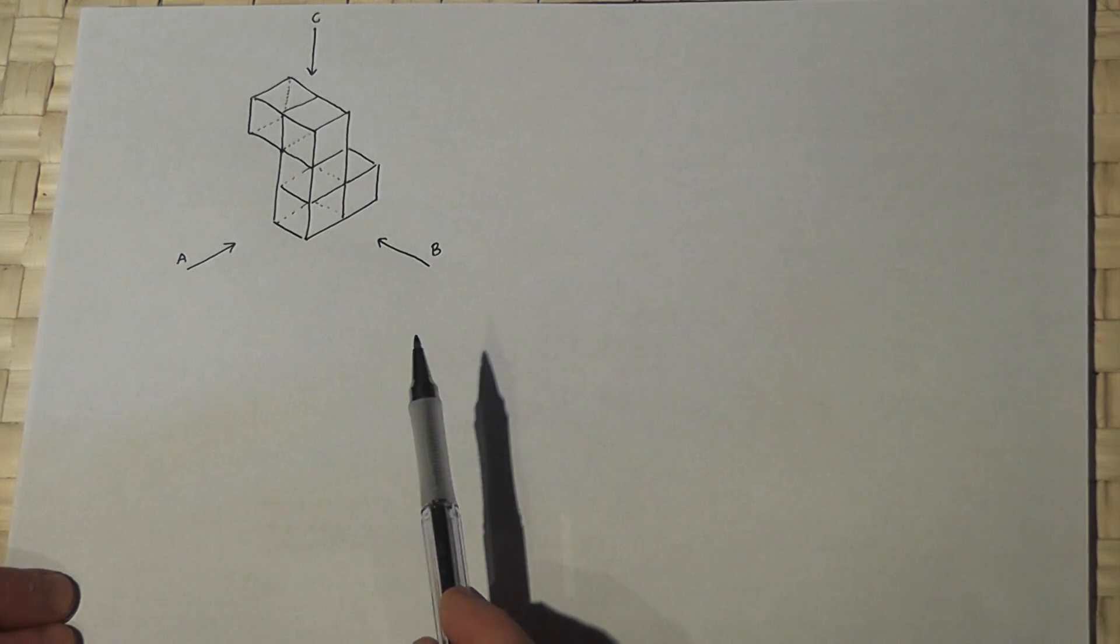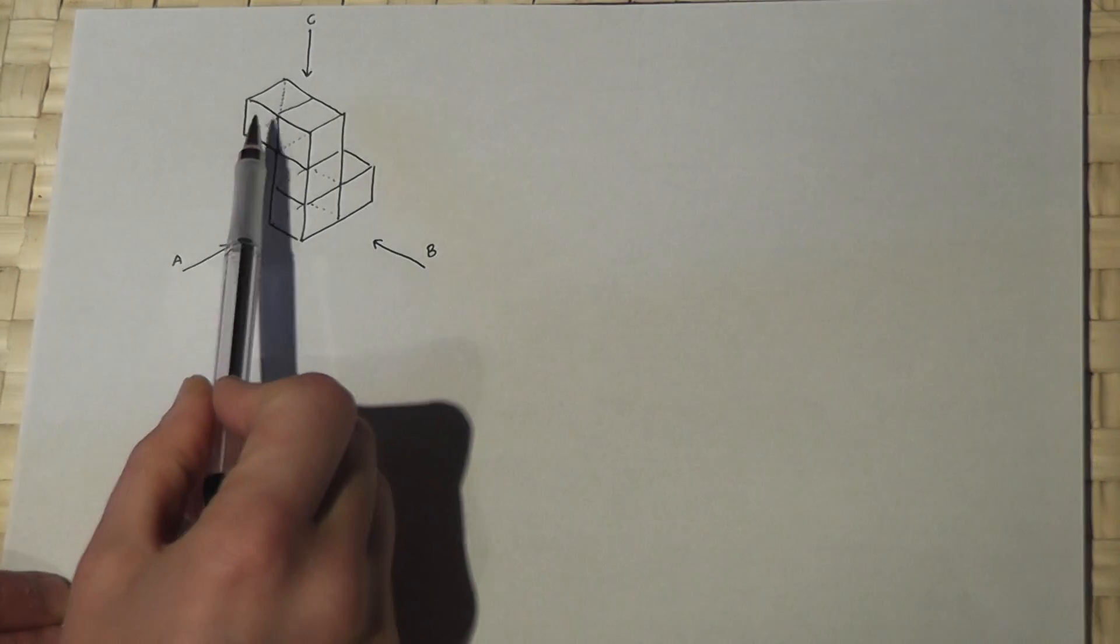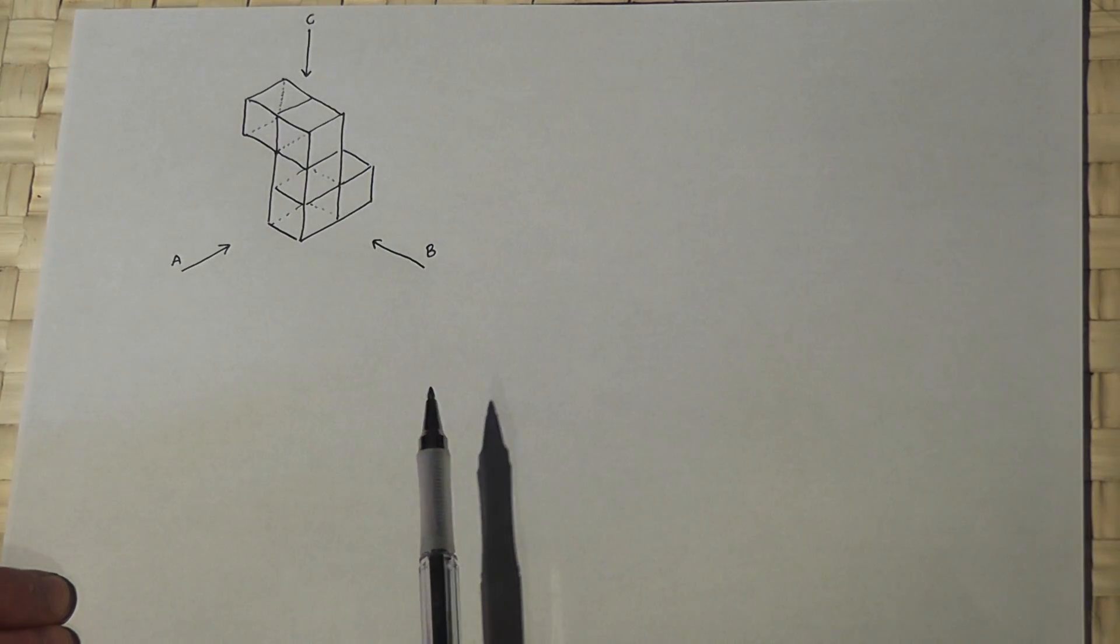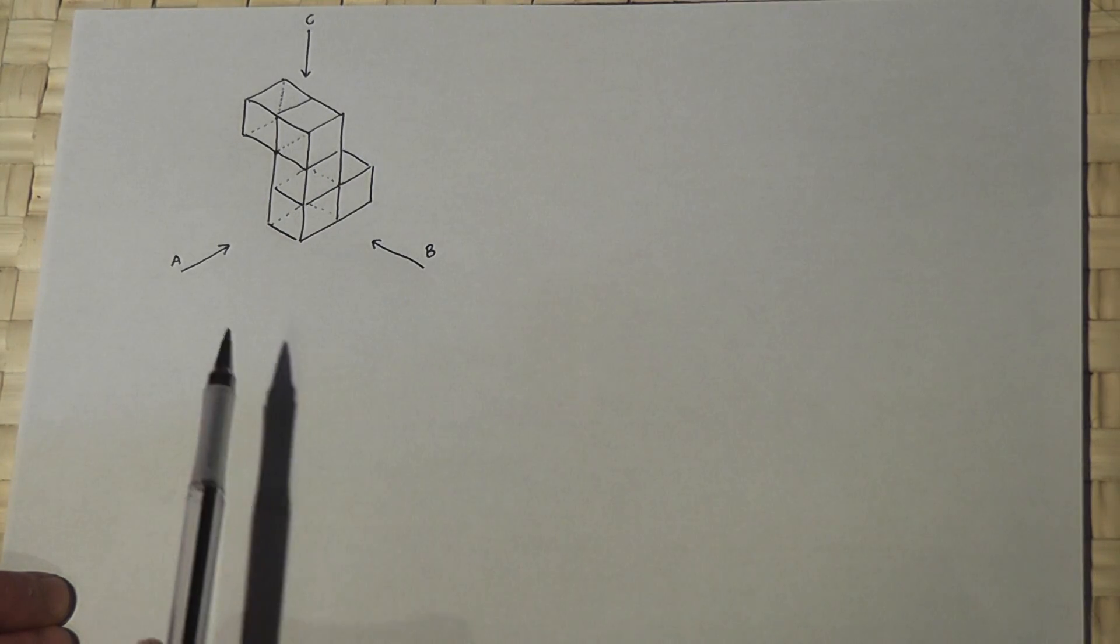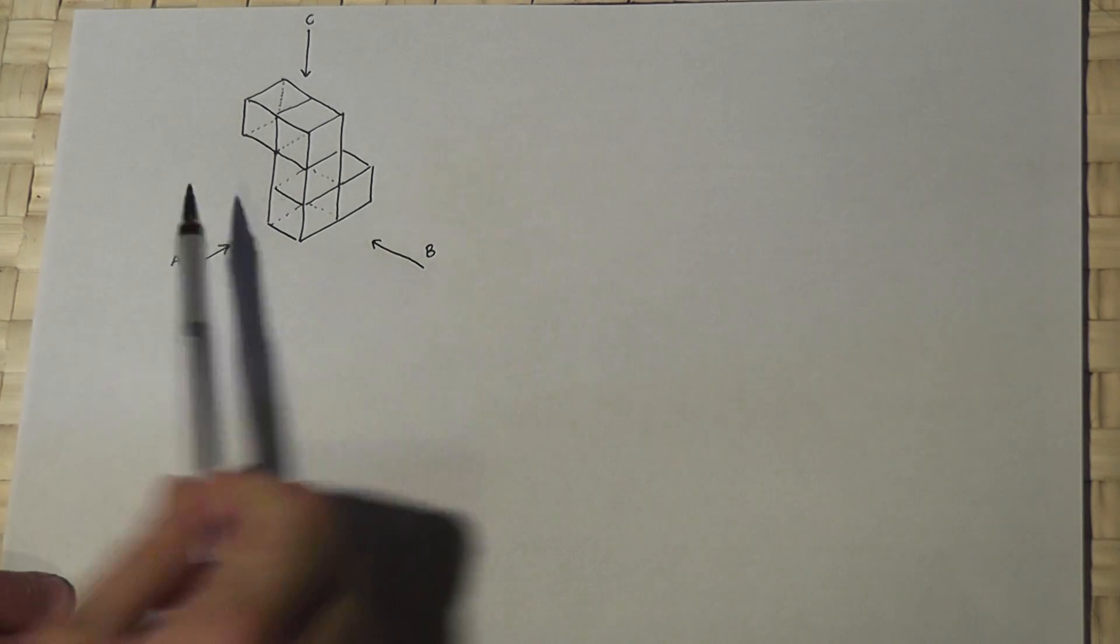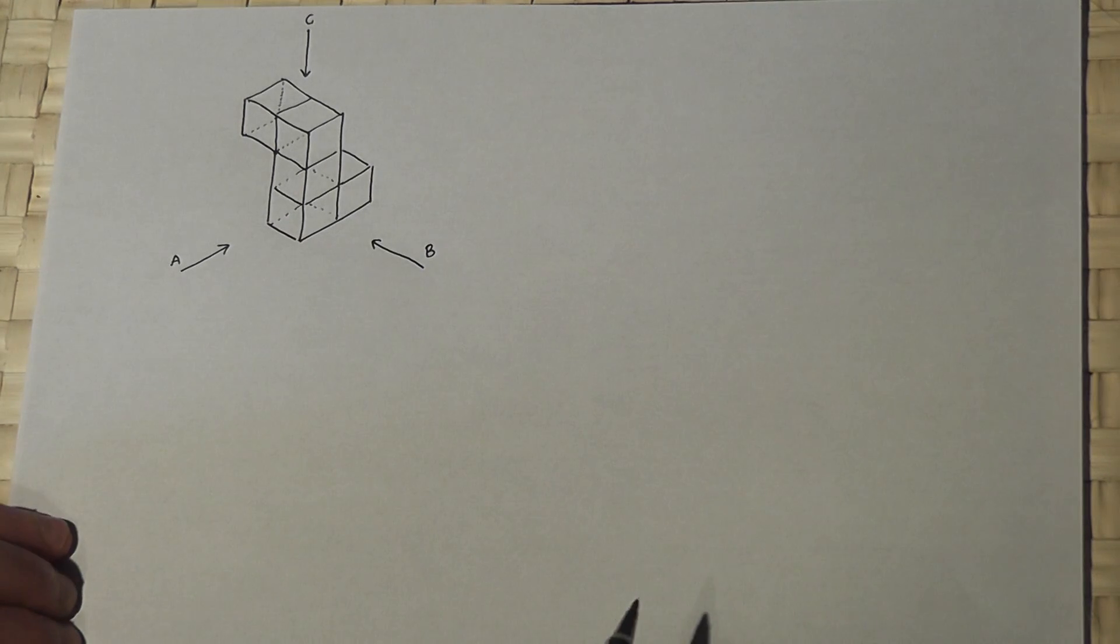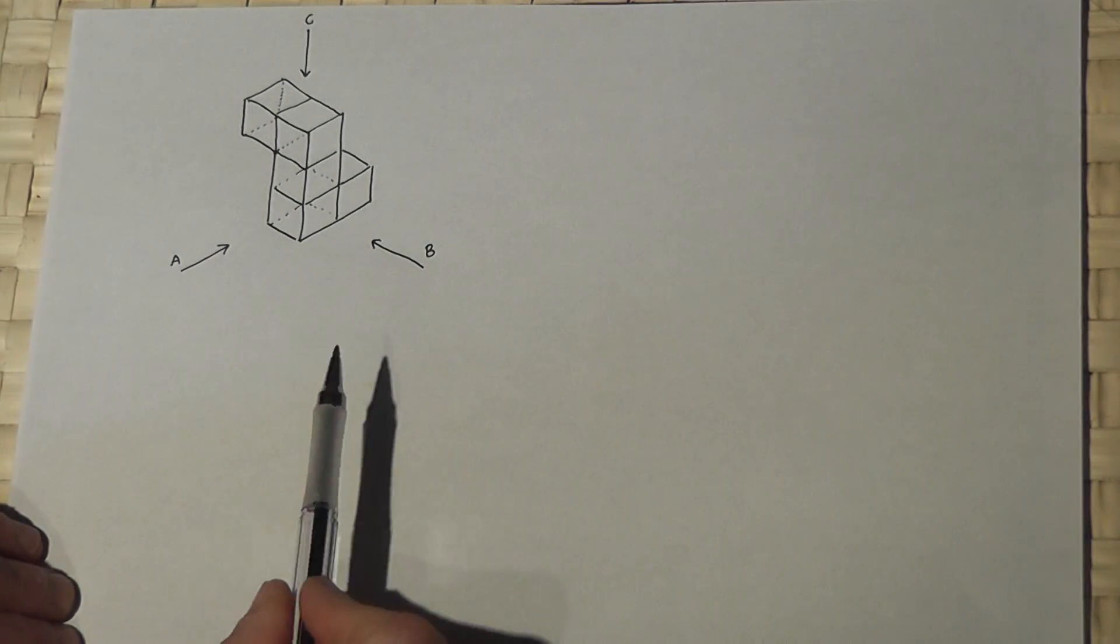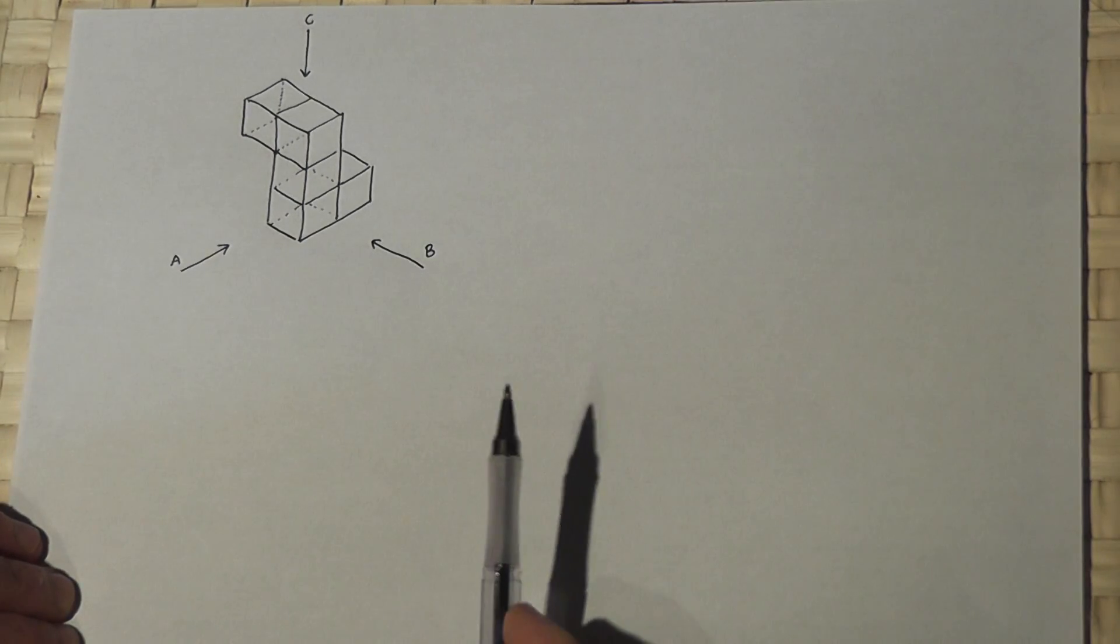In this video we have a 3D shape made of five cubes and we're asked to draw the view of this shape from three different angles. I will just sketch these below. So in the exam you would have a grid to draw on.